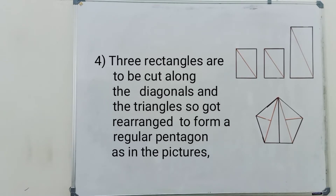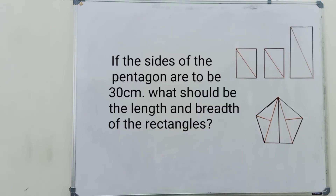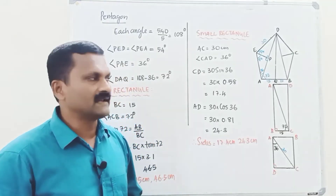Question number 4: three rectangles are to be cut along the diagonals and the triangles rearranged to form a regular pentagon, as in the picture. If the sides of the pentagon are to be 30 centimetres, what should be the length and breadth of the rectangles?